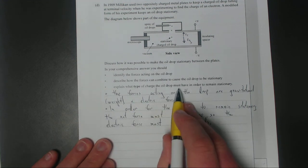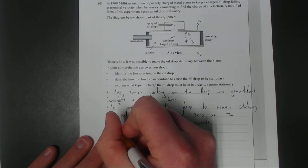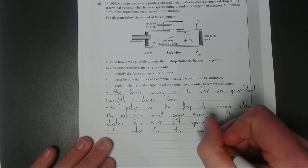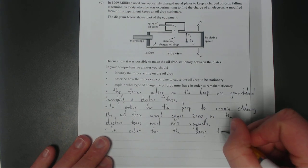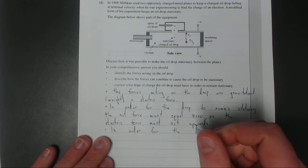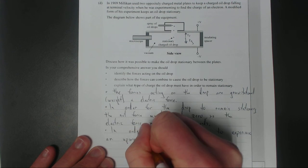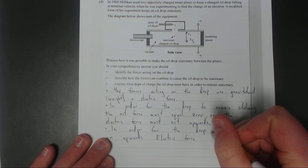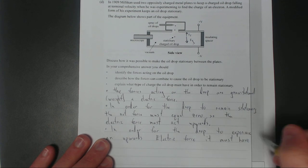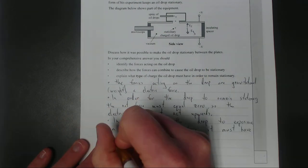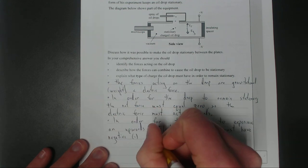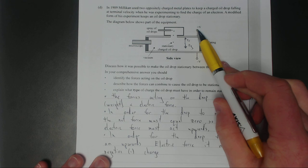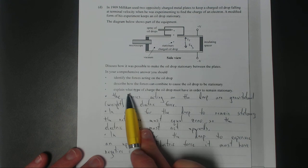What type of charge the oil drop must have in order to remain stationary. In order for the drop to experience an upwards electric force it must have a negative charge. It's got to have a negative charge because it needs to be attracted to the positive plate, or it could be repelled by the negative plate.